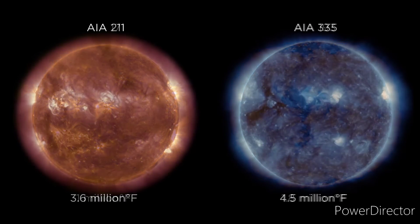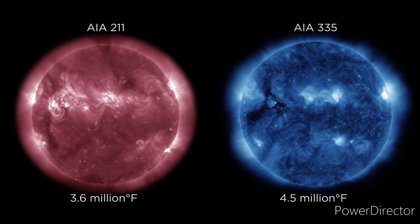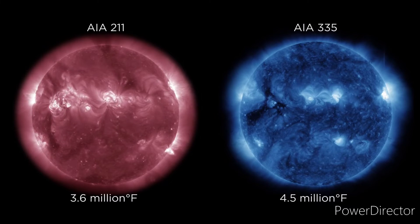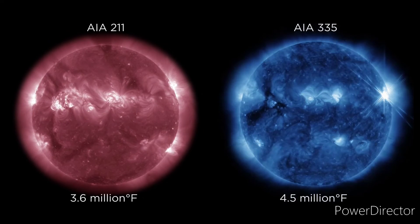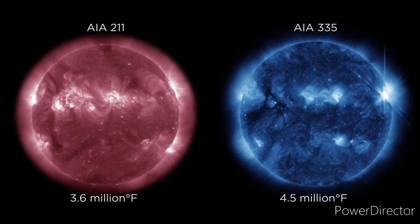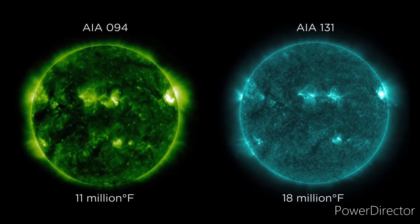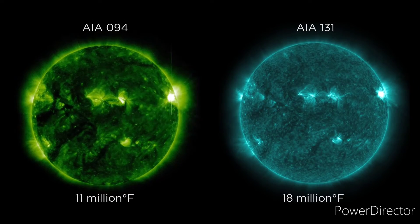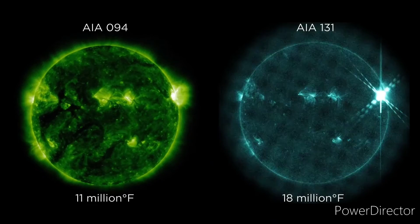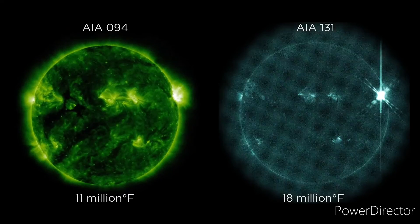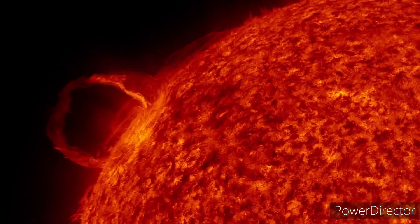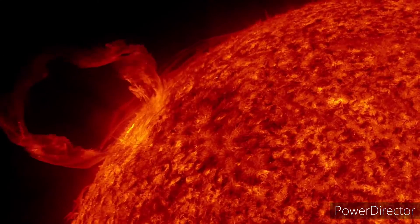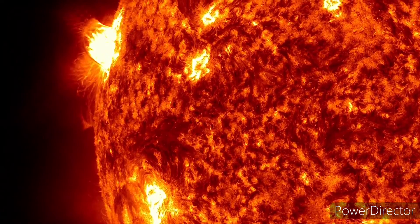These wavelengths reveal the sun's active regions, which have intense magnetic activity that sometimes give rise to eruptions. These wavelengths can see the hottest material in a solar flare. Being able to see the constant movement of material on the sun and in its atmosphere can help scientists better understand how our sun behaves and how to track storms that might affect our satellites and astronauts in space or communication on Earth.